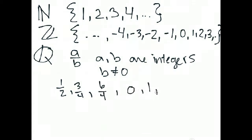Integers are also rational numbers. For example, 1 can be written as 1 over 1, or 0 as 0 over 1, and negative 4 as negative 4 over 1. Those make them all rational numbers.